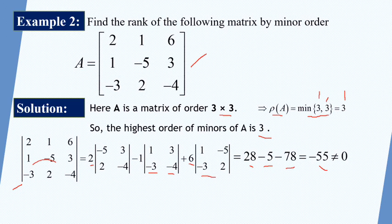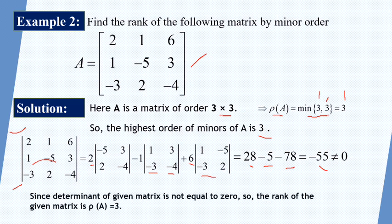Since the determinant is not equal to zero, the matrix is non-singular. If the determinant had been equal to zero, the rank would be less than 3. But here it is not zero, so the rank of the matrix is 3.